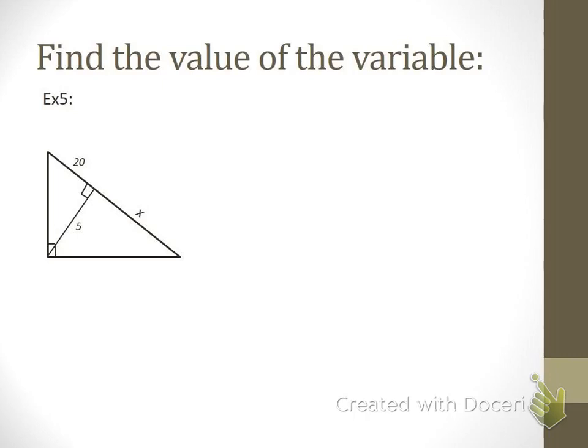Next one looks like this. Go ahead and stop the video and then start it back up and check and see if you're right. Okay, so the altitude is involved in this one, so we're going to use that altitude proportion where the altitude goes in the up diagonal, and we need the two pieces of the hypotenuse, so we need 20 and x. Cross multiply, 20x equals 25, divide both sides by 20, and we're looking at 5 over 4, or 1.25.